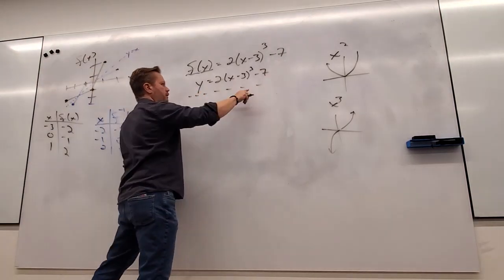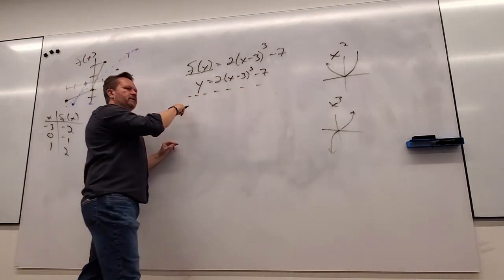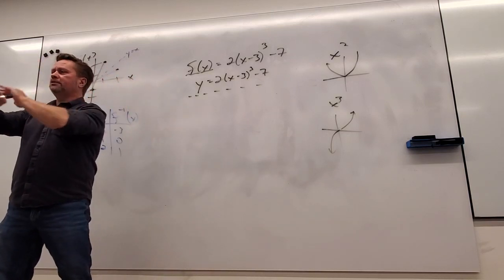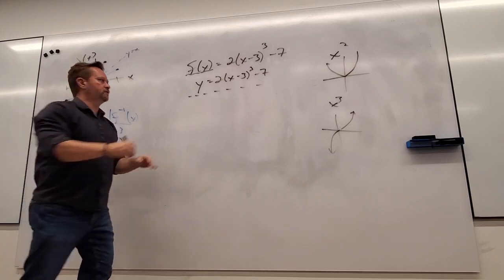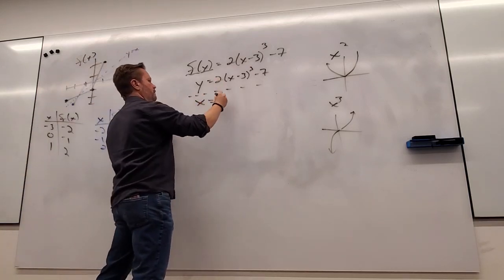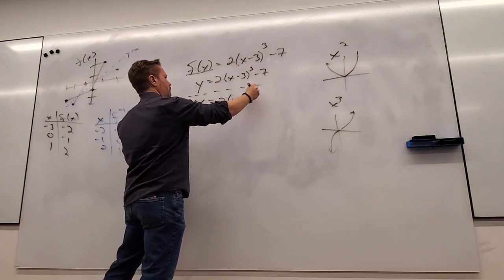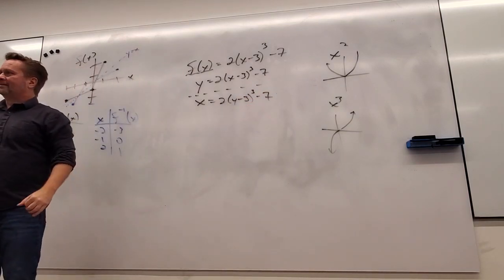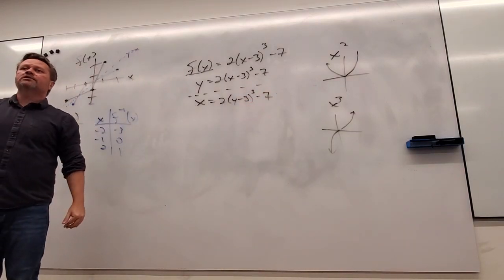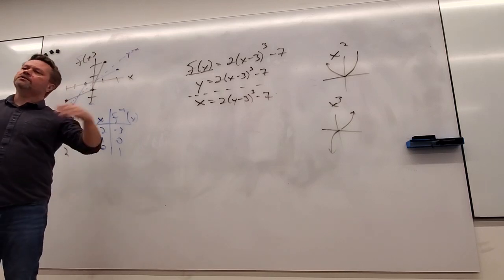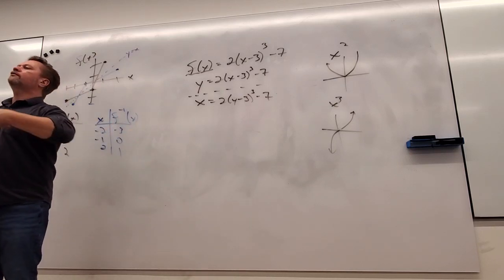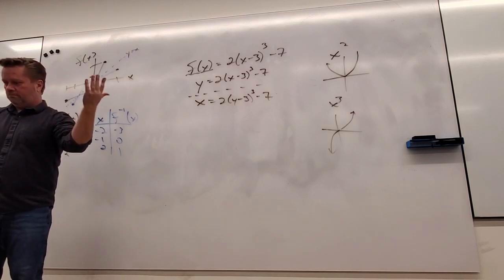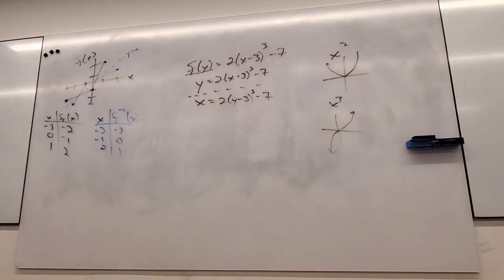I draw a little line here just reminding myself: you're not doing algebra, you're applying an idea. So I switch the x and y. Does everybody understand that in general you're not allowed to do that? This is the process to find the inverse — I'm not trying to solve it, I'm not trying to simplify it, I'm trying to find the inverse.